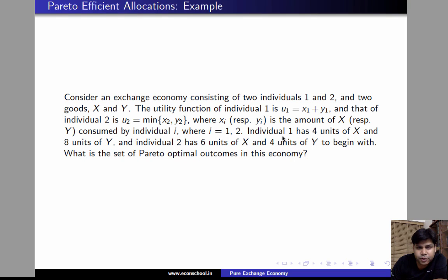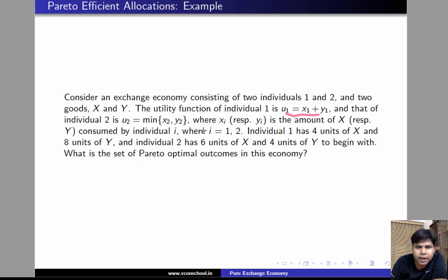Hi, in this video we will see how to find the set of efficient allocations in an economy in which individual 1's utility is u1 equals x1 plus y1, individual 2's utility function is u2 equals minimum of x2, y2. Individual 1 has 4 units of x, individual 2 has 6 units of x, individual 1 has 8 units of y, and individual 2 has 4 units of y.